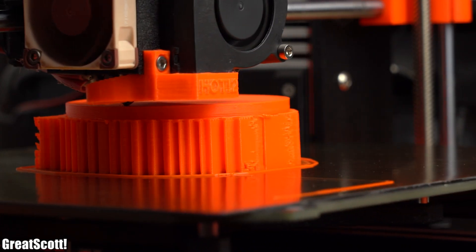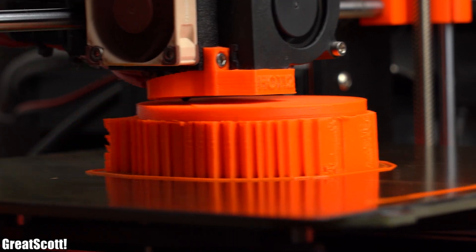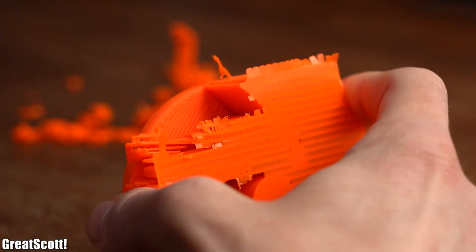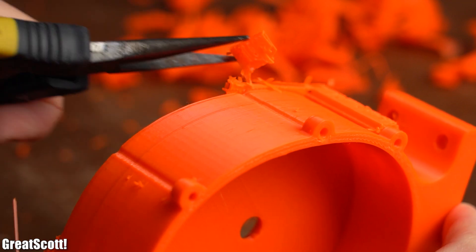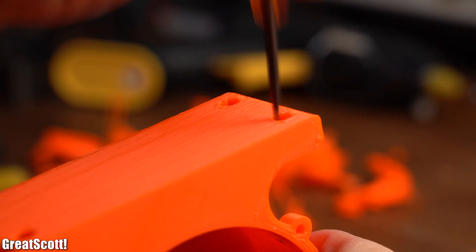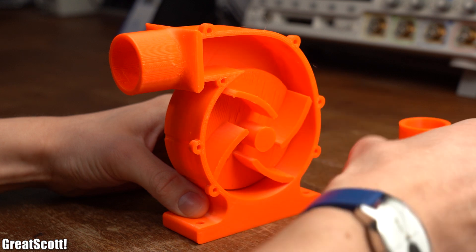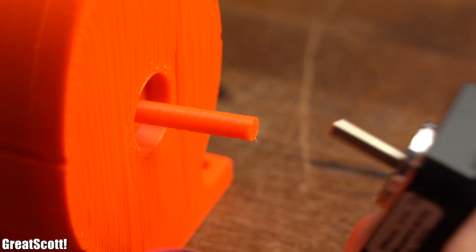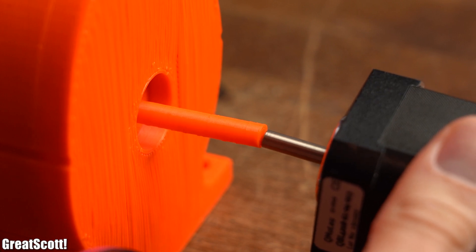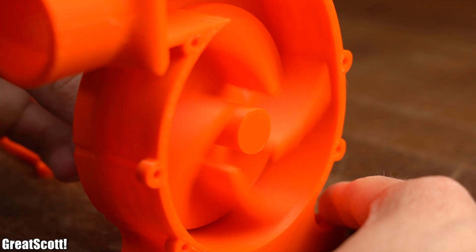For which I used orange PETG filament to give the pump a bit more mechanical strength. As soon as the three parts were printed, I removed all of their support material, which was a bit more difficult than I expected. But nevertheless, as soon as that was done, we can already see how the parts will fit together later on.